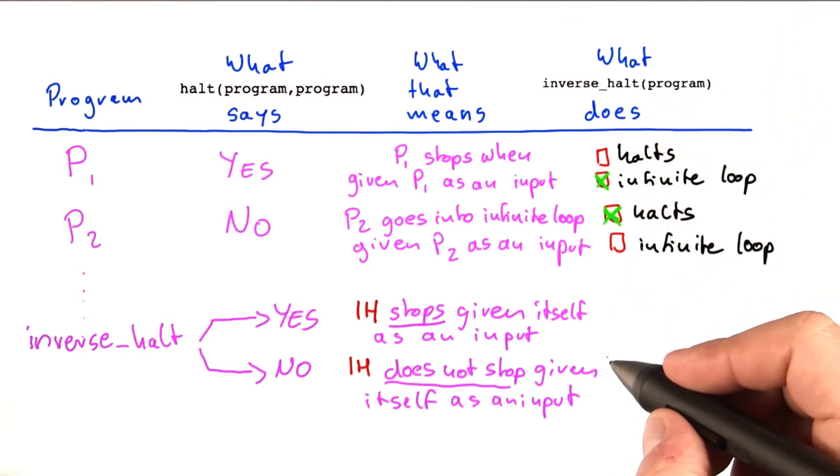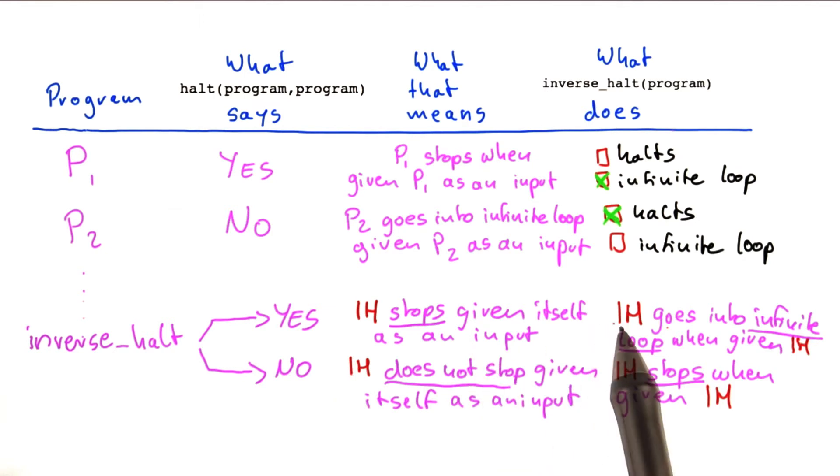we would have to write the following. So now let's compare those two statements in this line here. And here we said inverse halt will go into an infinite loop when given inverse halt, which is just itself as an input. So you have the same contradiction here as we had in the other proof.